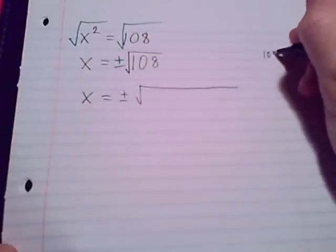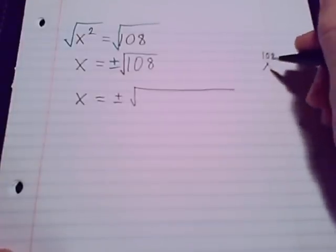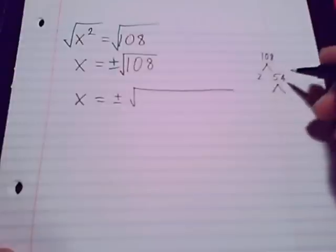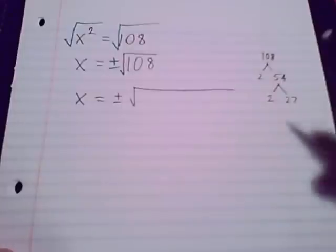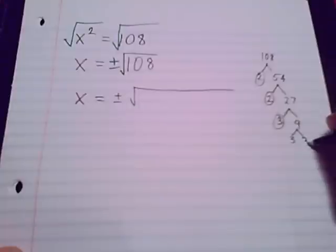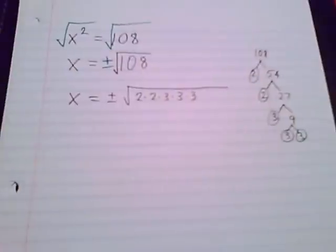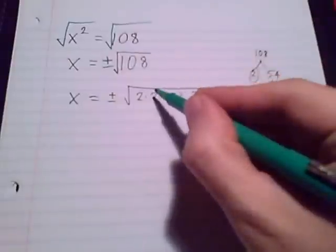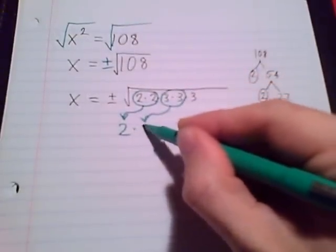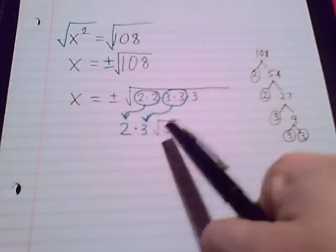To simplify the square root of 108, let's find its prime factors. 108 is even: divide by 2 to get 54, divide by 2 to get 27, then divide by 3 to get 9, and divide by 3 to get 3. So 108 equals 2 times 2 times 3 times 3 times 3. In prime factor form, pairs come outside the radical: the pair of 2s comes out, the pair of 3s comes out, and one remaining 3 stays inside the radical.